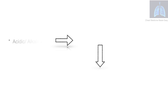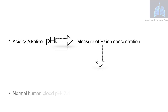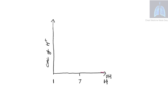When we talk about acidity or alkalinity, that is a reference to the pH. pH is a measure of the H+ ion concentration in a solution. The normal human blood pH is 7.4. pH is defined as minus log of the concentration of H+. Note that pH is a negative logarithmic function, and that means when the pH reduces by a value of 1, there is an increase in the concentration of H+ ion by 10 folds.